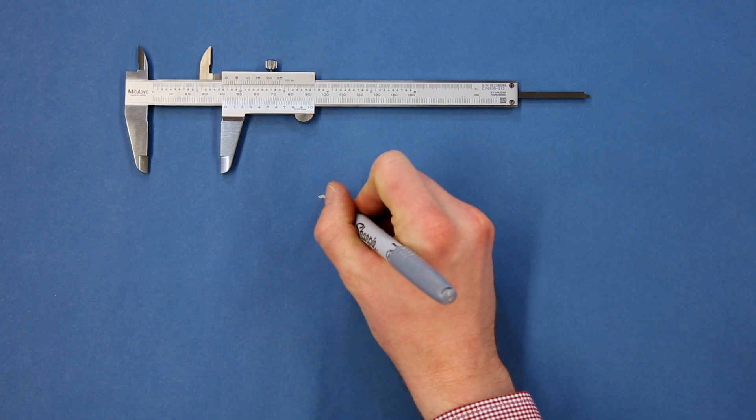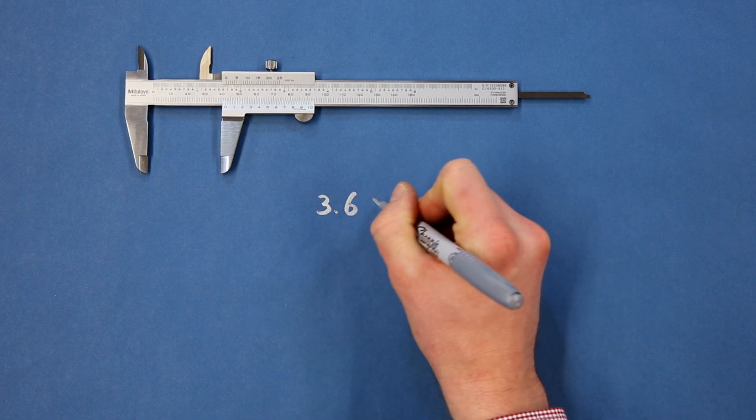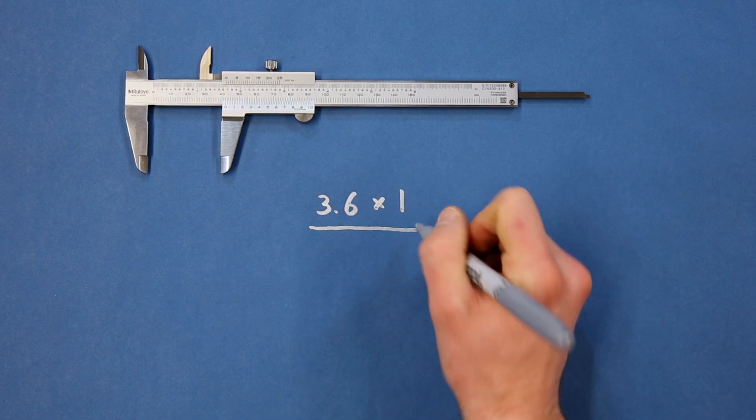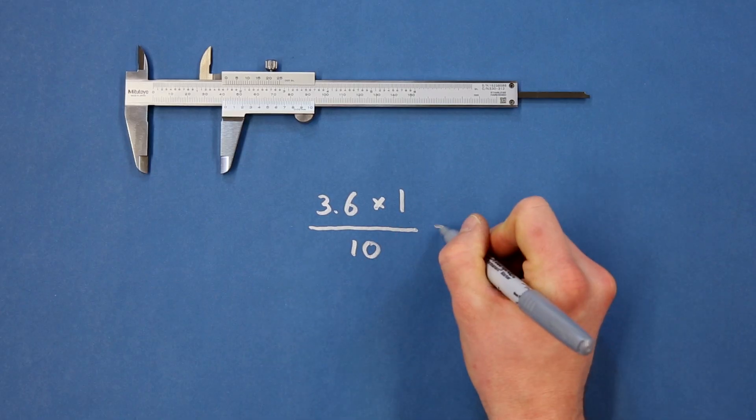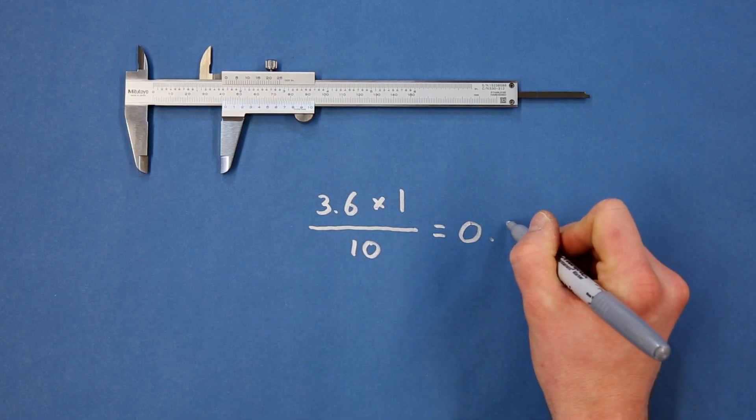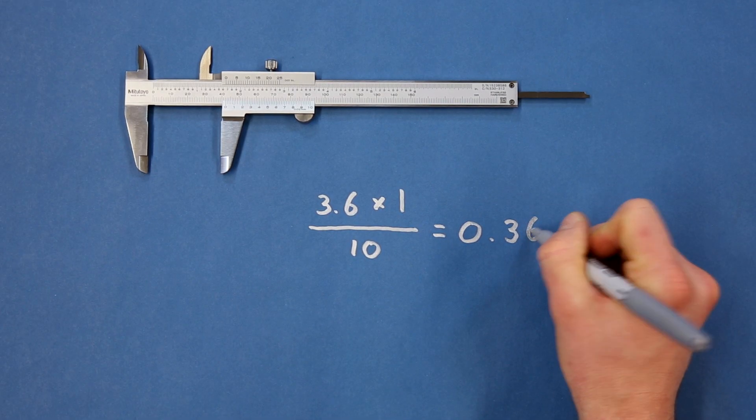However, some vernier scales aren't marked with an increment, so you'll have to do some math. Vernier scales are designed to show where the measurement lies in between two marks on the main scale. It's like you've zoomed in to view even more increments in between marks on the main scale. So, to find the value,